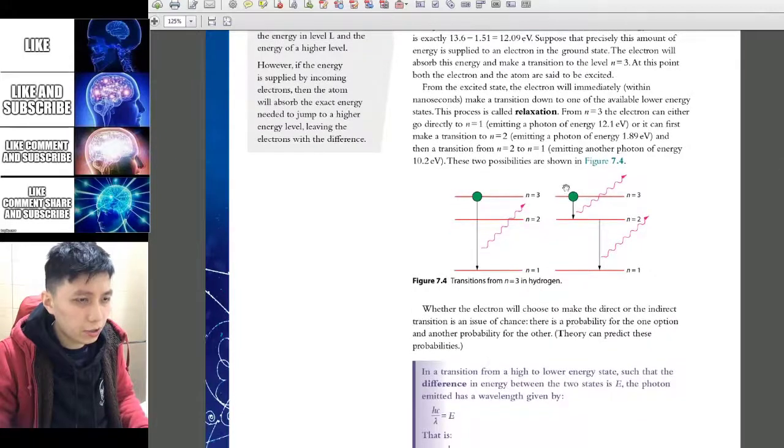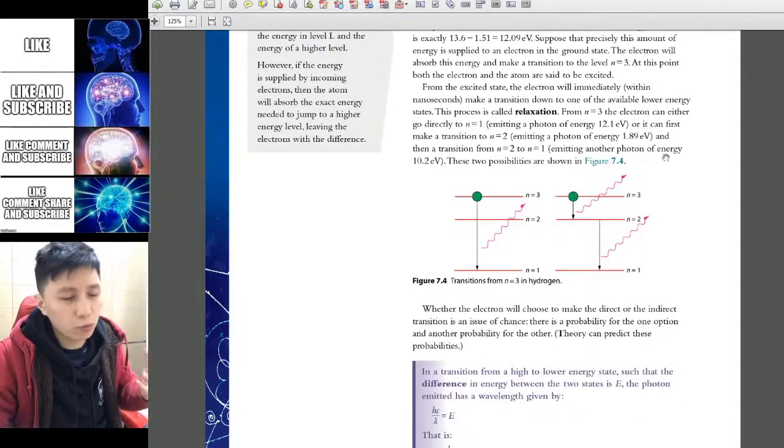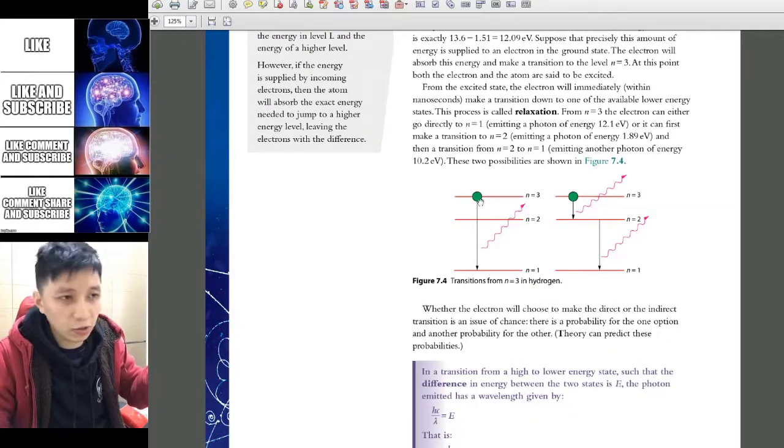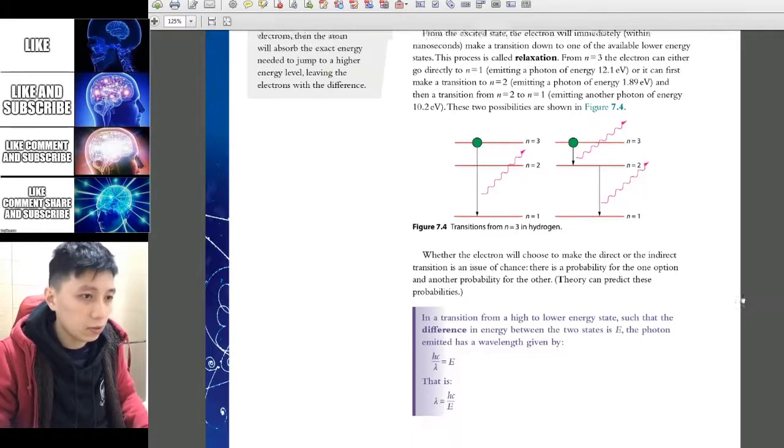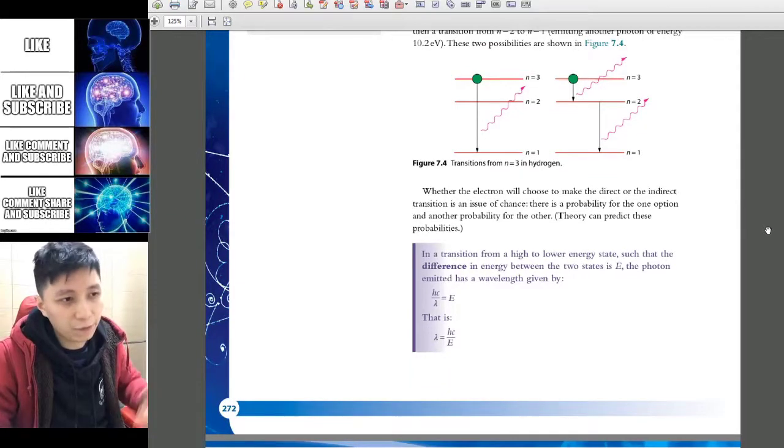And here are just an illustration on how we can see visually. So dropping from 3 to 1, or it can also drop from 3 to 2 first, and then drop to 1. So it can have different combinations.